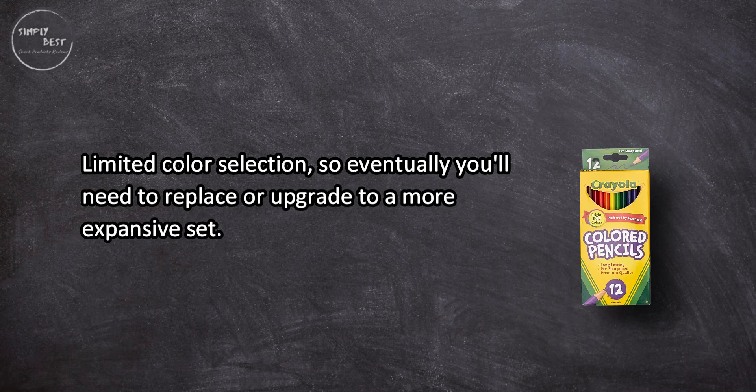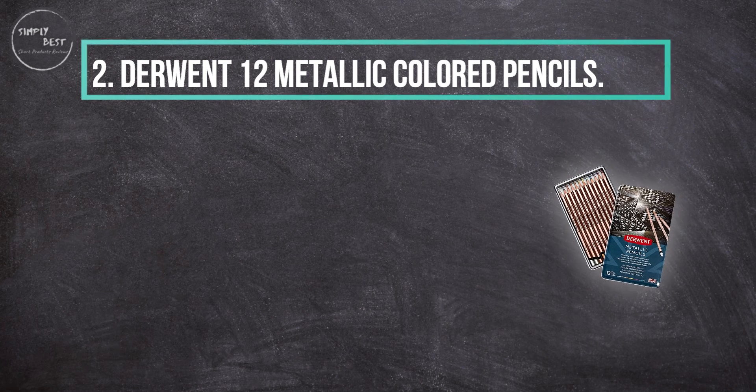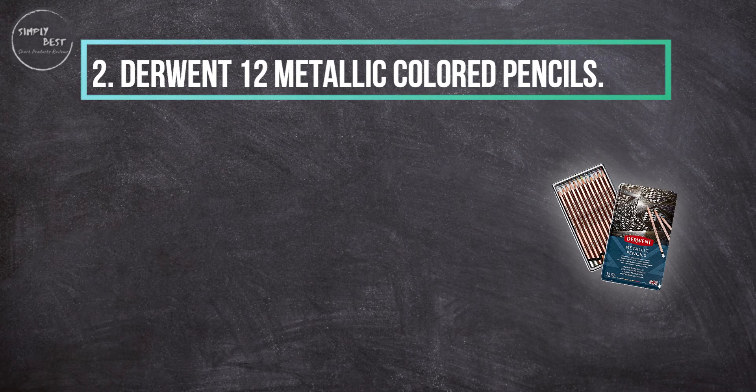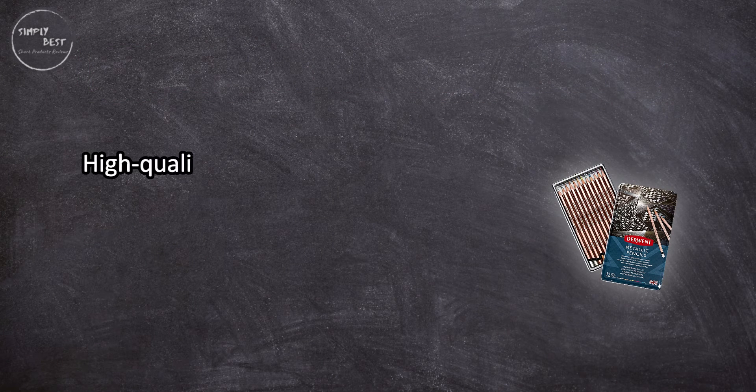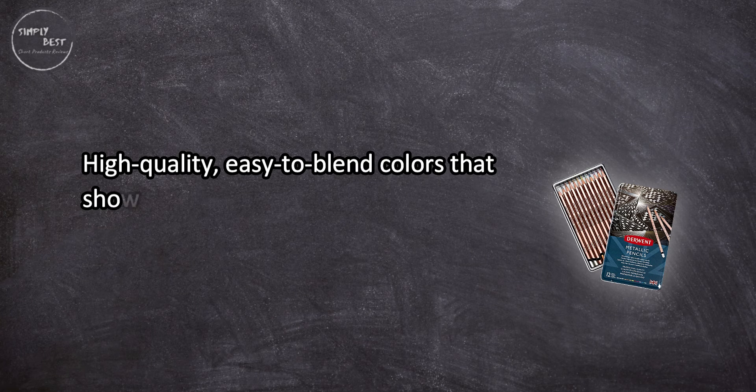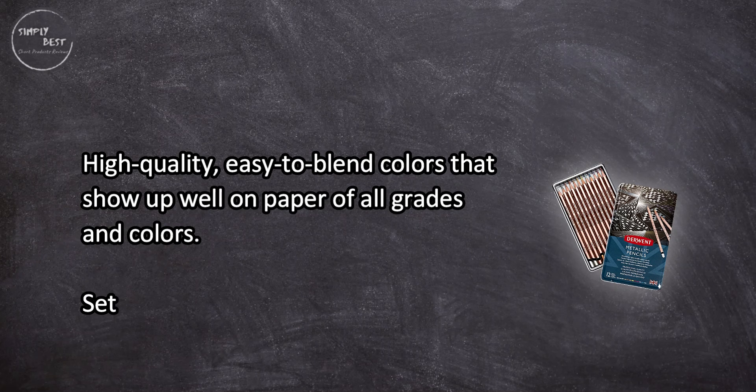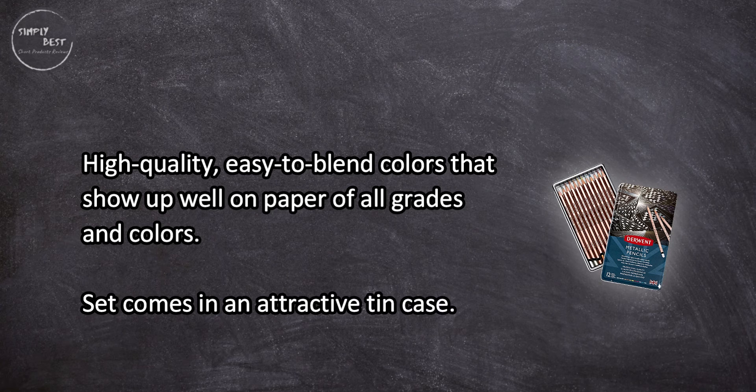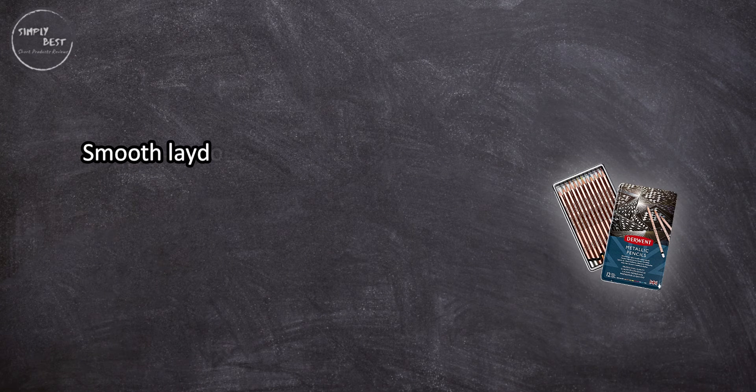At number 2, Derwent 12 metallic colored pencils. High-quality, easy-to-blend colors that show up well on paper of all grades and colors. Set comes in an attractive tin case. Smooth lay down and a popular choice for adult coloring.